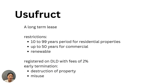Usufruct is a long-term lease. You can own a residential property for up to 99 years or a commercial property for up to 50 years, and it is also renewable. However, you have fewer rights on the property — you cannot change it at all — and the lease is voided if you destroy or misuse the property. The fees are 2%, payable to the DLD or a registration trustee.